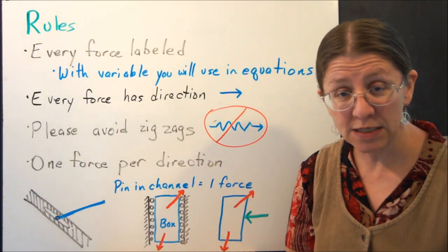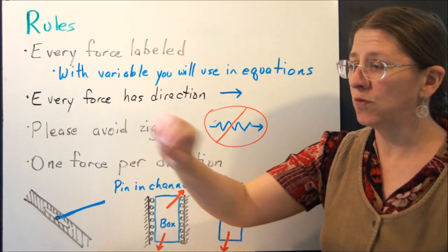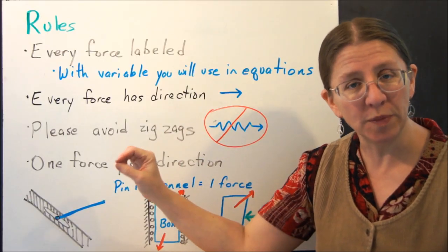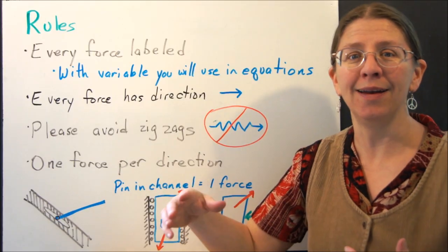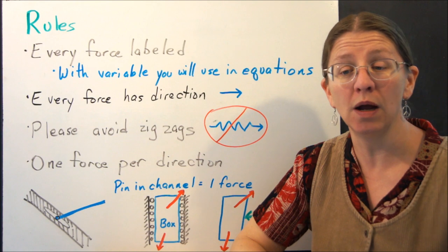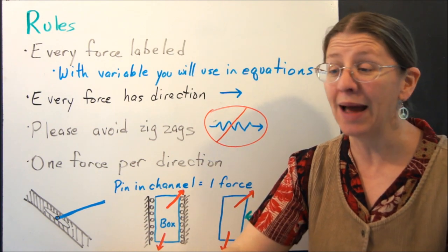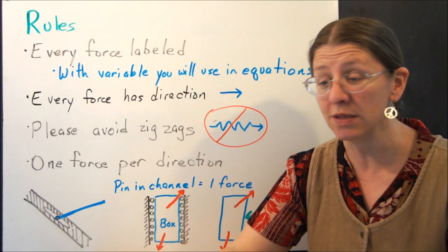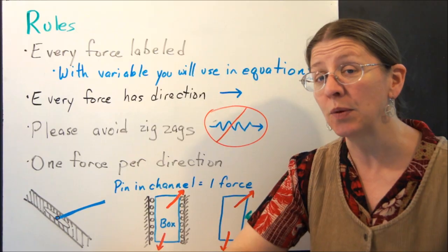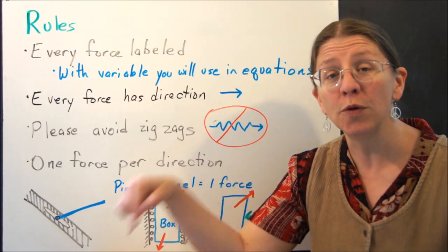Now, every force has to be labeled. And when I say labeled, what I mean is I want to say not 'this is the force that comes from the normal from the table,' I want it to say N because it serves as the map key for your equations. As an engineer, if I look at your equations of equilibrium, I don't know what F is and I don't know what Q is and I don't know what S is. You have to tell me what those are. Those labels become understandable from your free body diagram.